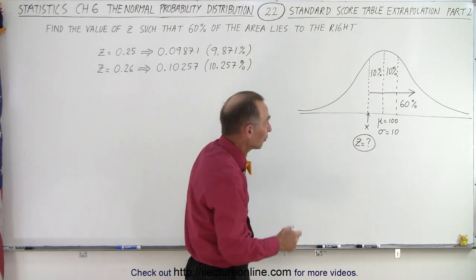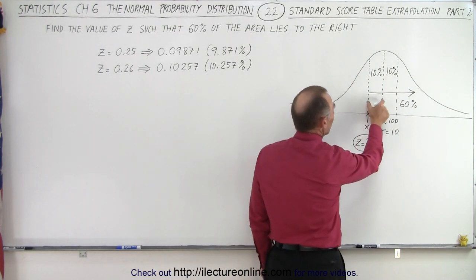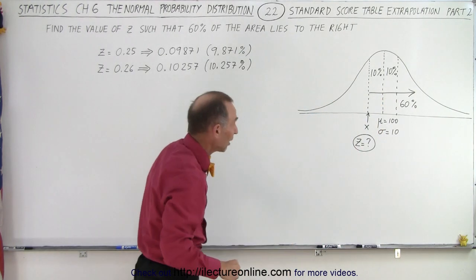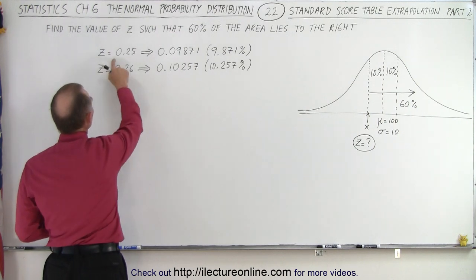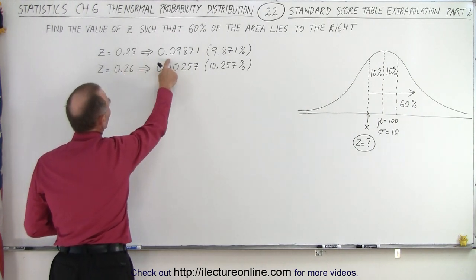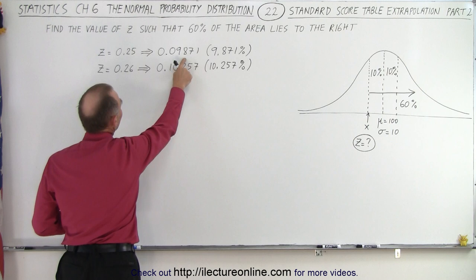So essentially we're looking for the z values corresponding to 0.1 in the table or 10%. And if we go look at the table, we realize that when z equals 0.25, it corresponds to 0.09871, which is 9.871%.